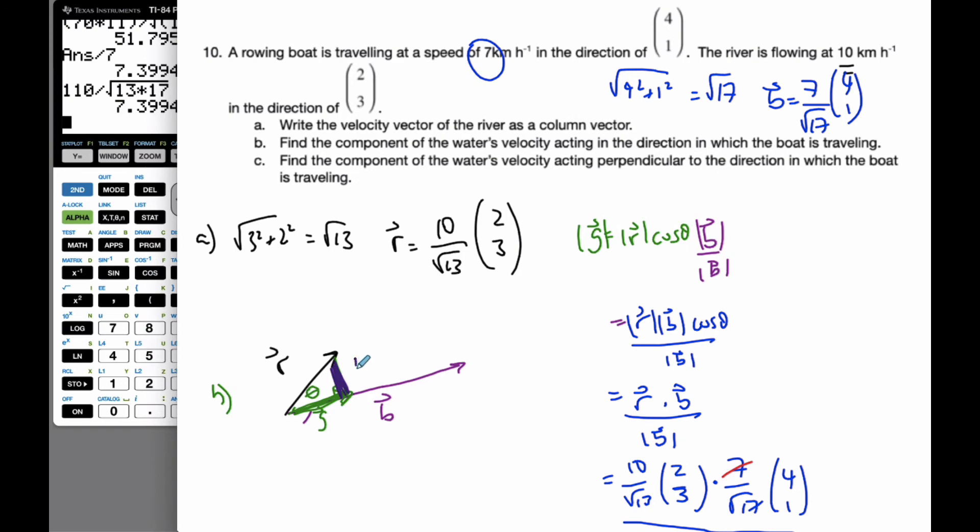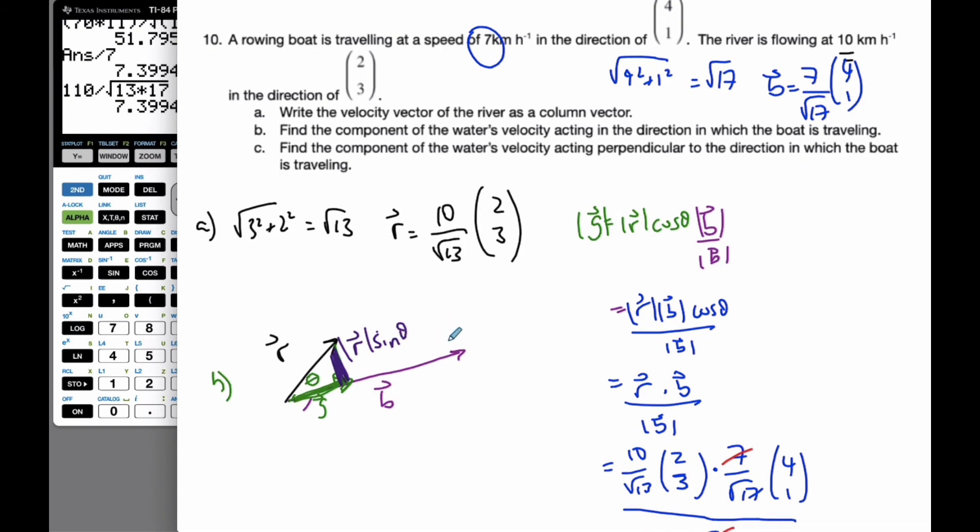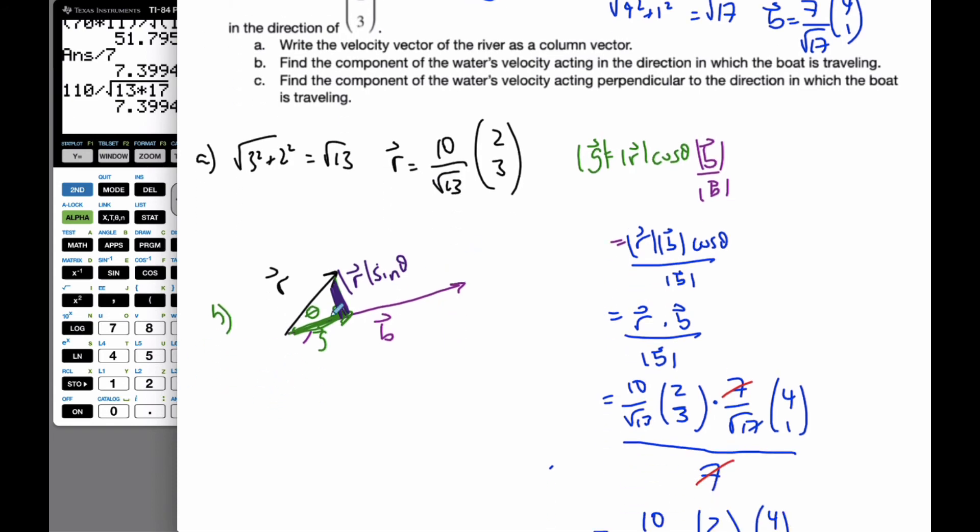And this is going to be R sine of theta. And so, doing the same idea, I know that this value here, which we'll call A vector, the magnitude, is going to equal to, well, I'll go through this derivation.